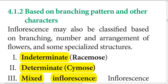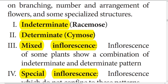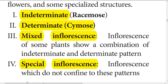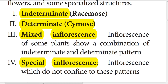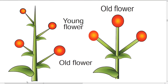Based on the branching pattern and other characters, the inflorescence may be classified into four types: indeterminate (racemose) inflorescence, determinate (cymose) inflorescence, mixed inflorescence which is a combination of both, and some special inflorescence that will not be confined to any of the above patterns. Here we can see the diagram of racemose and cymose.